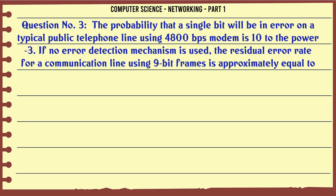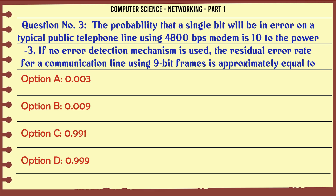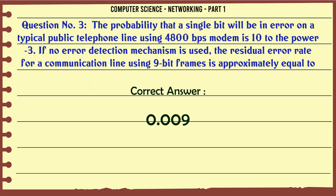The probability that a single bit will be in error on a typical public telephone line using a 4,800 BPS modem is 10 to the power -3. If no error detection mechanism is used, the residual error rate for a communication line using 9-bit frames is approximately equal to. The correct answer is: 0.009.